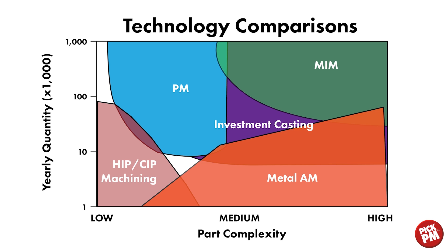This graph shows technology comparisons, with part complexity from low to high on the bottom axis and yearly quantities on the Y axis. In the bottom left are HIP and SIP — low part complexity and typically lower volume. Above that, in blue, is conventional powder metallurgy at medium part complexity and very high volume. In the top right is MIM, or metal injection molding, with very high volumes and very high part complexity. In the bottom right is metal additive manufacturing — high part complexity but lower annual volumes. These technologies overlay technologies such as investment casting and machining.